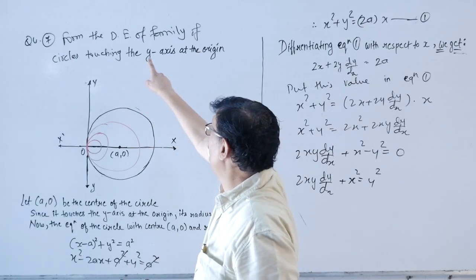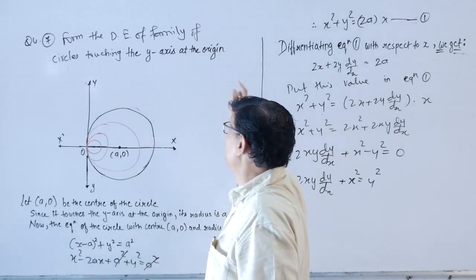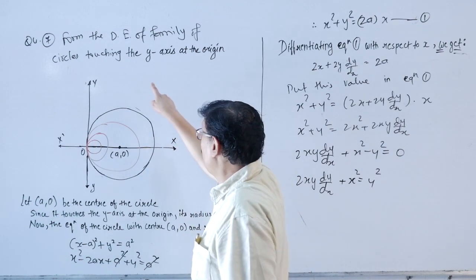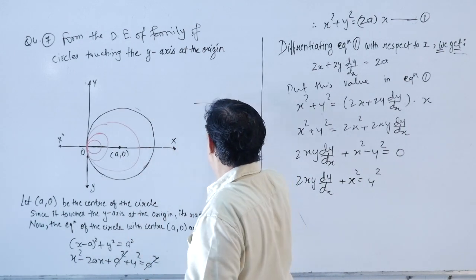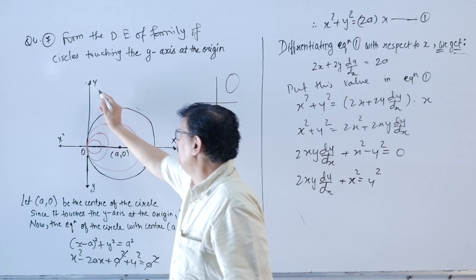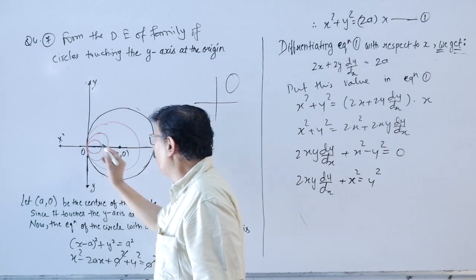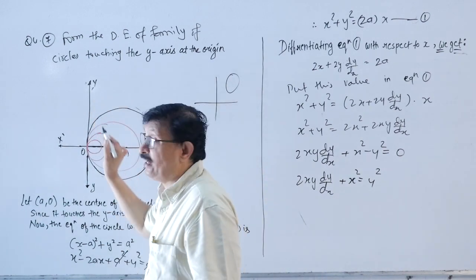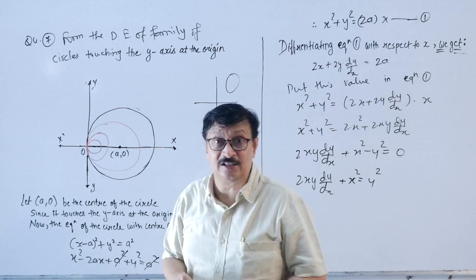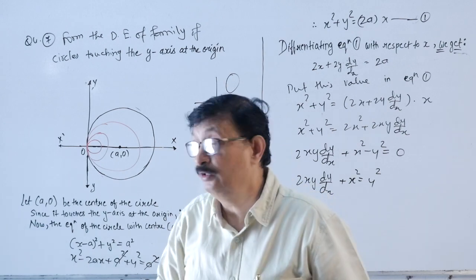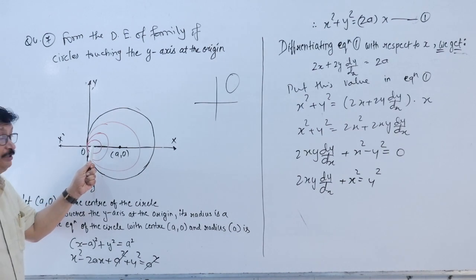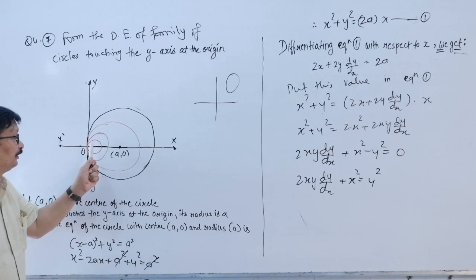Example 7: form the differential equation of the family of circles touching the y-axis at the origin. This is a family of circles — but only those touching the y-axis at the origin are allowed. If the circle touches the y-axis at the origin, then looking at the center, it naturally lies on the x-axis.